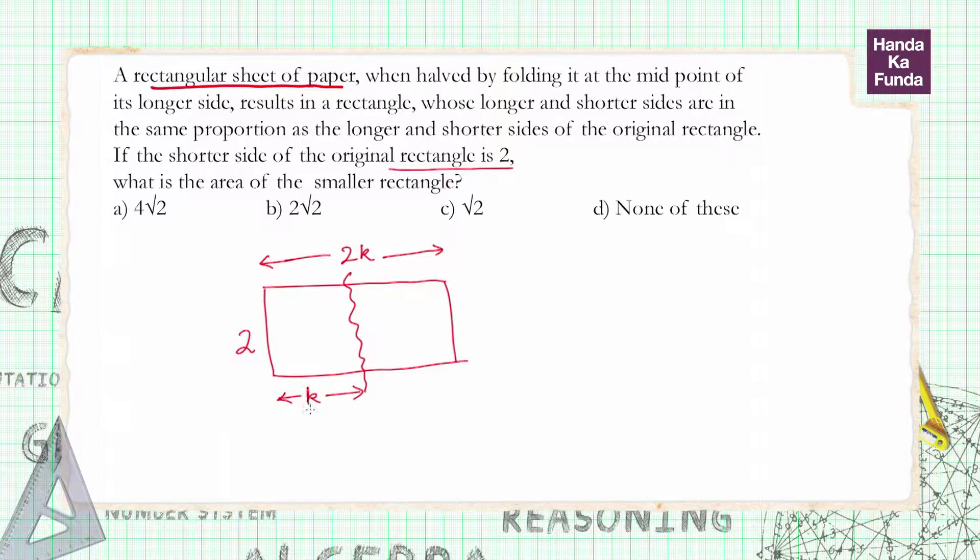Now what is given to us is that it is in the same proportion. So earlier, the smaller one was 2 and the bigger one was 2k. Now the smaller one is k and the bigger one is 2.